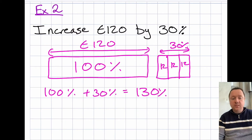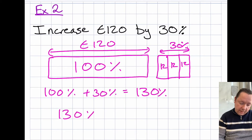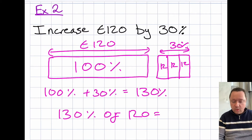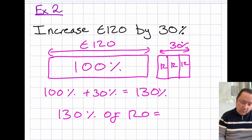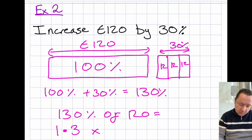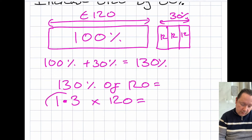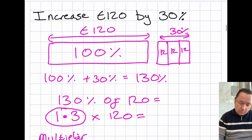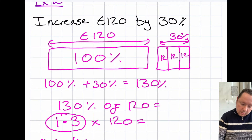So the sum is now just 130% of £120, which will give us the answer. We know it's going to be £120 plus 30% of £120. We can do the same trick we did in example 1: change the percentage to a decimal by dividing by 100, so it's 1.3 times 120. And this 1.3 is what we call our multiplier. That gives us £156.